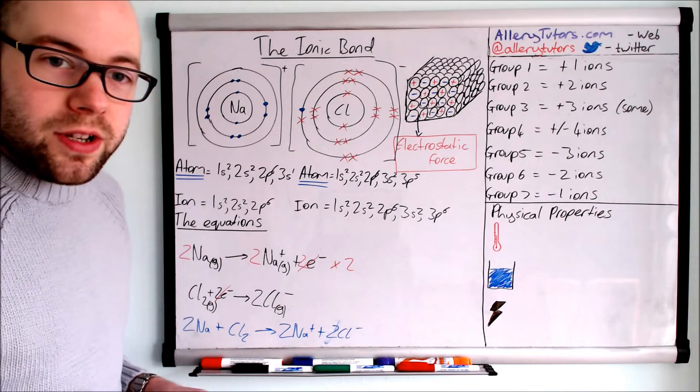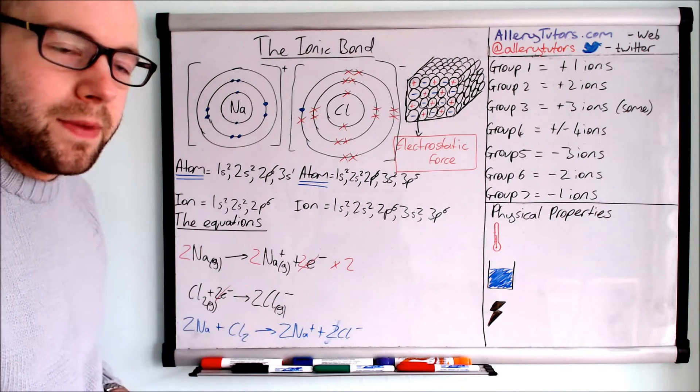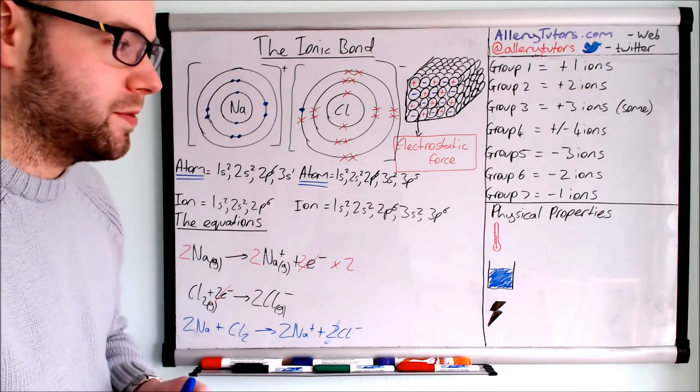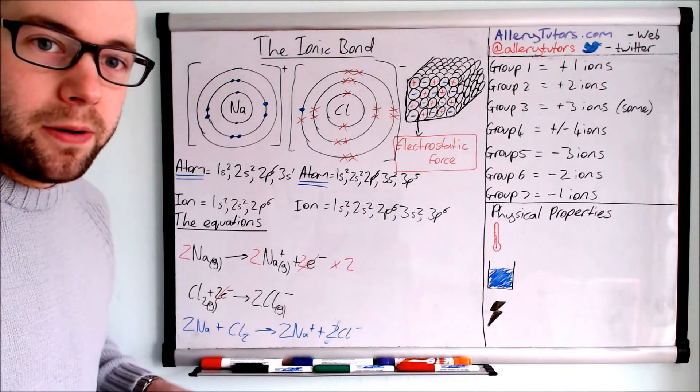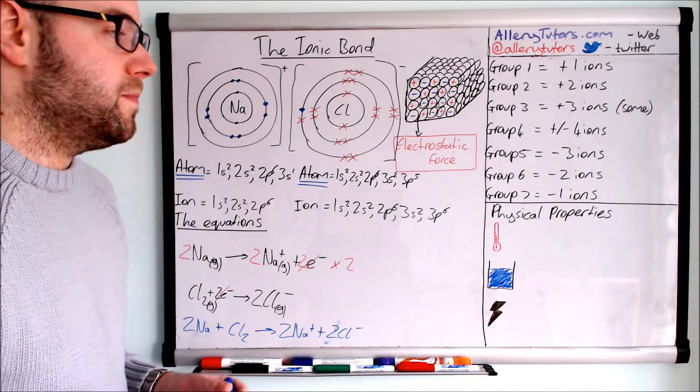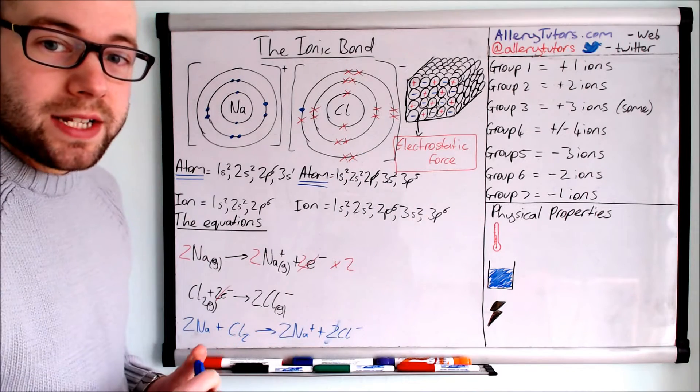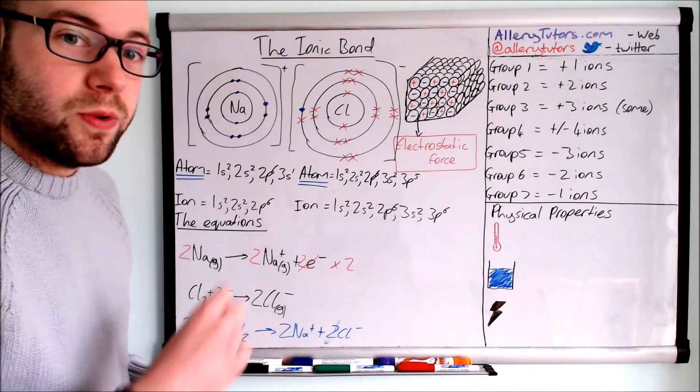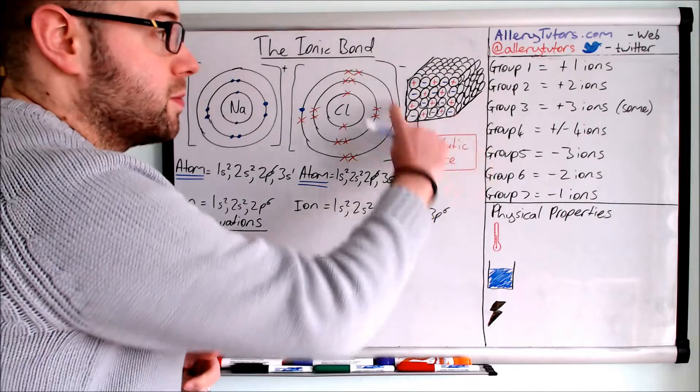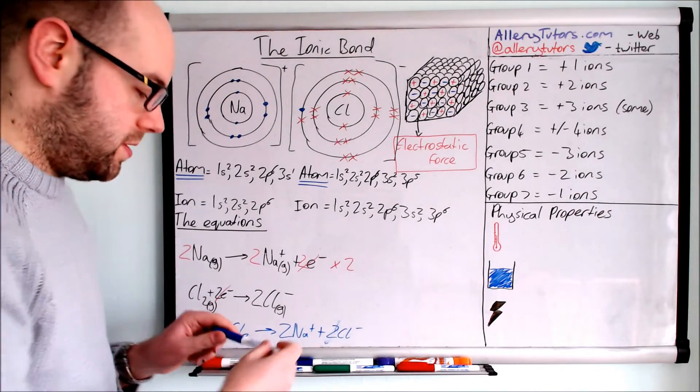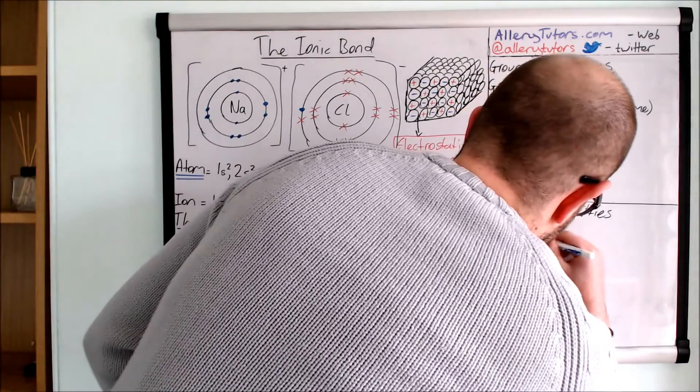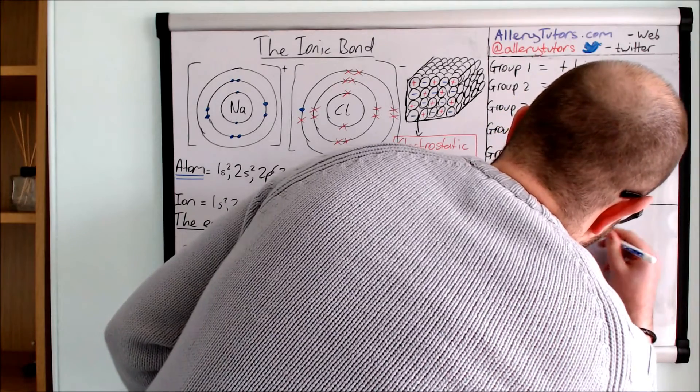And the last thing as well is to go through physical properties. This is quite common in the exam to link structure and bonding with the actual property of the chemical. That's what chemistry is all about after all. So we're going to look at melting and boiling points first. These things actually have very high melting points. They have very strong electrostatic forces between oppositely charged ions—these are the words that you need to use. Because they've got strong forces, and there's a lot of them, they form giant ionic structures, so they have high melting points.